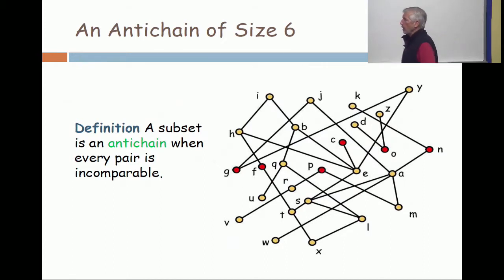So now we want to take the dual concept. A subset of a PoSET, a subset of points, is called an anti-chain when every pair is incomparable.